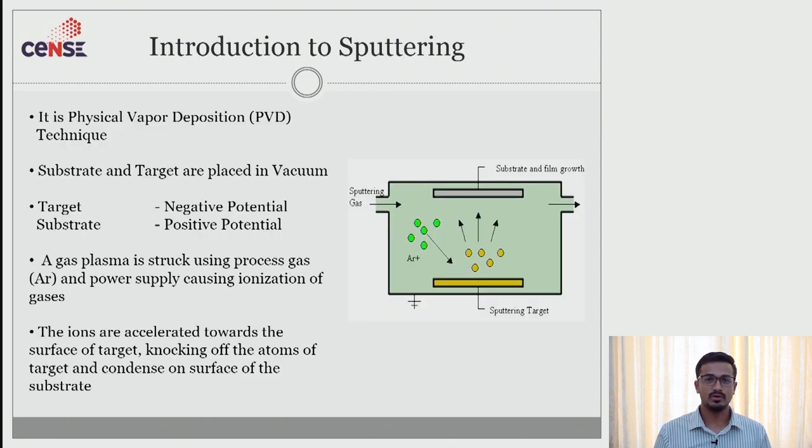We will move on to introduction of sputtering. Sputtering is a process of physical vapor deposition. In physical vapor deposition techniques we mainly have a chamber. Chamber has to be evacuated by using rotary pump followed by a diffusion pump, turbo molecular pump or a cryo pump. In this condition we have less amount of particles or less number of particles.